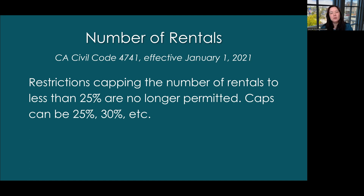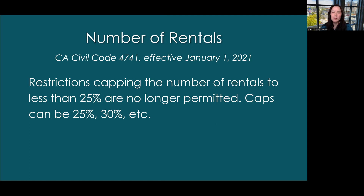As of January 1st, 2021, there was a California law — California Civil Code 4741 — enacted to say that any restrictions capping the number of rentals to less than 25% are no longer permitted. So the caps can be 25%, 30%, 35%. Generally it's going to be 25% to 35%. HOAs with a cap less than that, say 20%, cannot enforce it and have to allow for the 25% number.